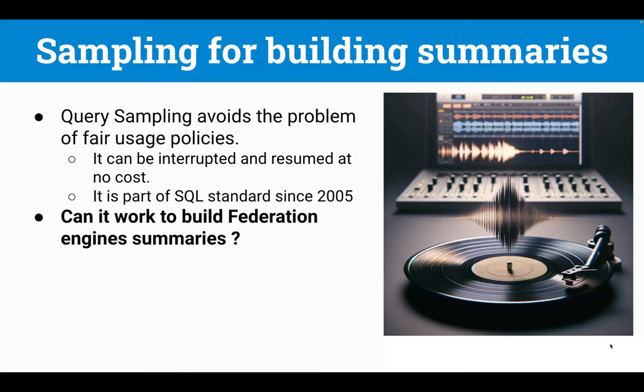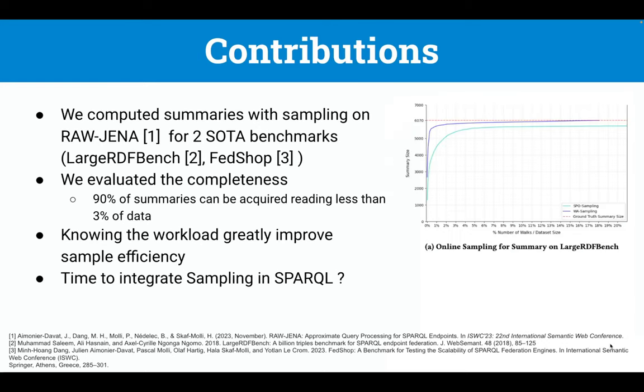Now, imagine we have sampling in SPARQL — can we build federation engine summaries online? This is our research question. In the paper, for the first time, we computed summary queries using online sampling on two state-of-the-art benchmarks: a synthetic one and LargeRDFBench, a benchmark based on real data.